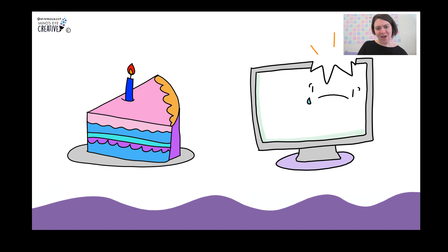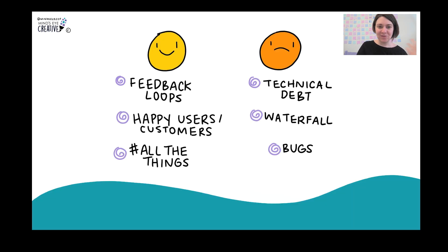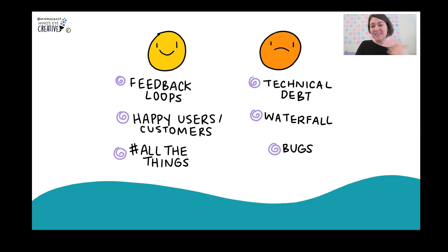Another thing you mention a lot is baking — baking things into things. That seems to be a pretty common thing I draw, as well as breaking. Baking and breaking. 'It will break eventually' is what I tend to hear. A few other things you like and don't like: you really like feedback loops, happy customers, and hashtag all the things. Things you're not a huge fan of anymore: waterfall, bugs, and technical debt. Which is totally understandable.